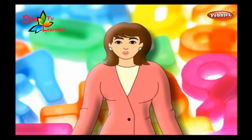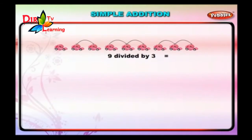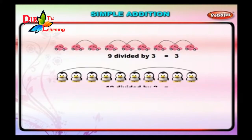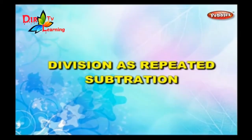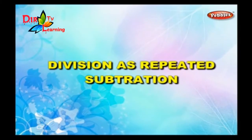Division. Let us do some examples to revise the sums which we did in the previous class. 9 divided by 3 is equal to 3. 10 divided by 2 is equal to 5. 8 divided by 4 is equal to 2. Here the answer is called the quotient.